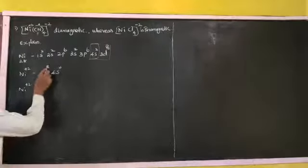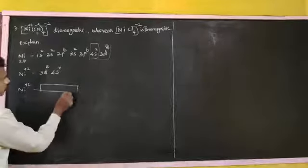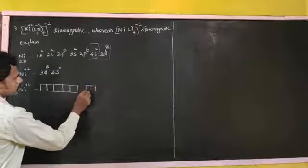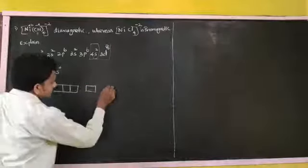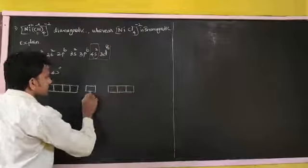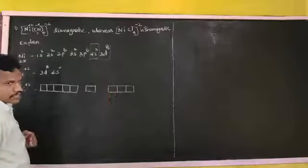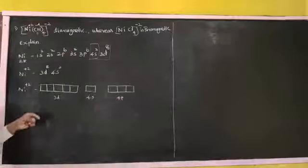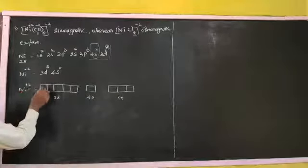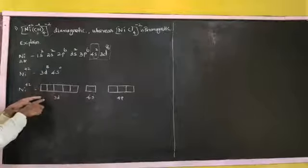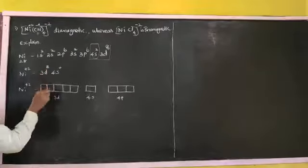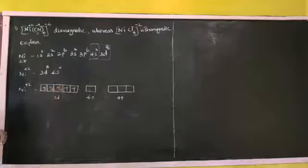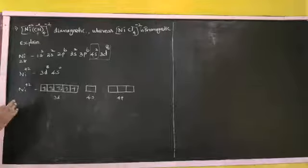For the Ni²⁺ orbital arrangement, 3d⁸ means the d orbital has 5 boxes. Next the empty 4s orbital is a single box, then 4p orbital. So the sequence is 3d, then 4s, then 4p. To fill the electrons we follow Hund's rule. For 3d⁸ we accommodate 8 electrons: 1, 2, 3, 4, 5, 6, 7, 8.